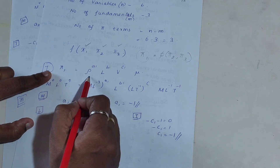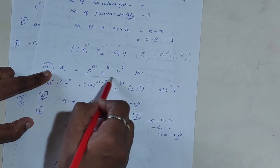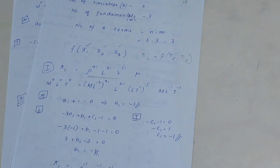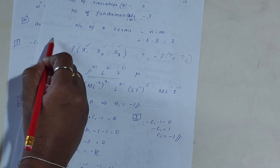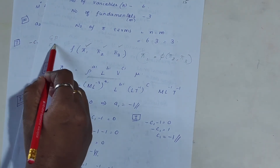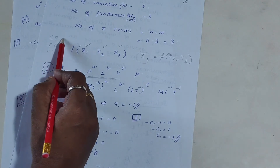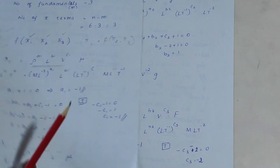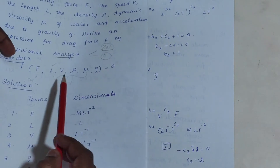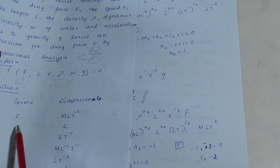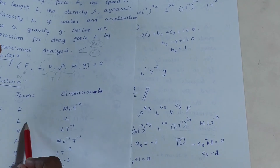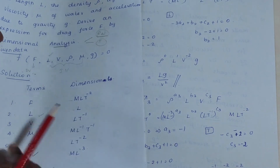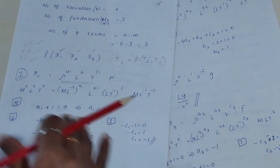To find π₁, you have to select the repeating variables. Three repeating variables must be chosen: one satisfying geometric property, one flow property, and one fluid property. We have selected L as the geometric property, V as the flow property, and ρ as the fluid property. The remaining variables are then the non-repeating variables.